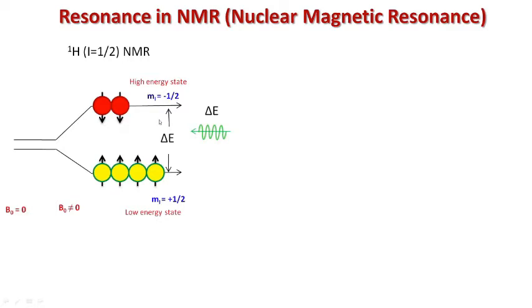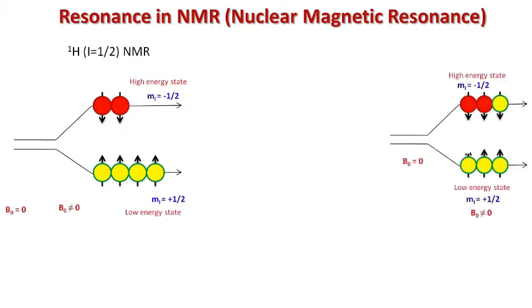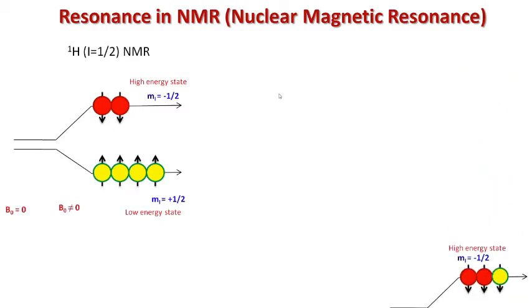The nuclei present in the low energy state absorb the radio frequency radiation and excite to the high energy state, flipping their orientation. This is the quantum mechanical picture, which we also see in other spectroscopic techniques.